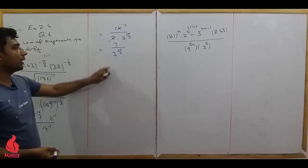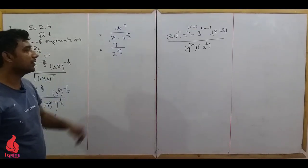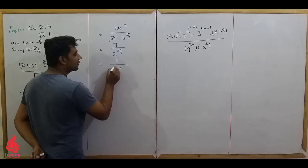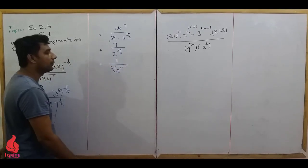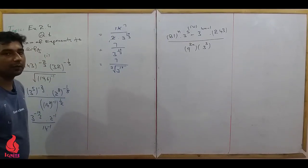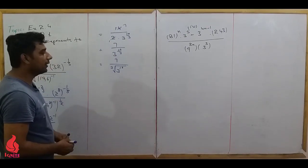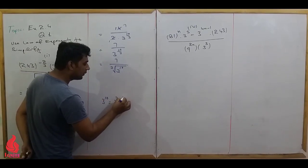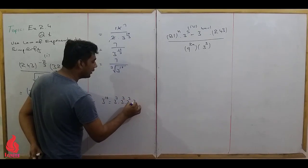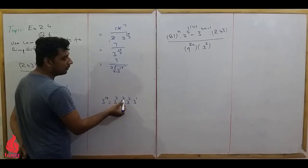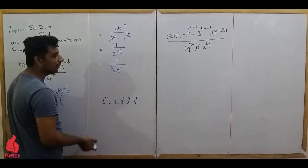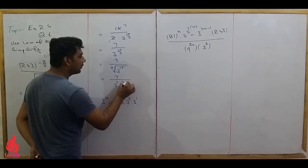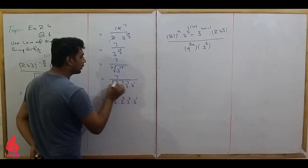We simplify 7 over 3 raise to power 10 over 3 further by converting to radical form — as studied in the previous Exercise 2.3. We write 3 raise to power 10 as 3 raise to power 3 times 3 raise to power 3 times 3 raise to power 3 times 3 raise to power 1, since 3+3+3+1 = 10. The denominator 3 in the fractional exponent indicates a cube root.